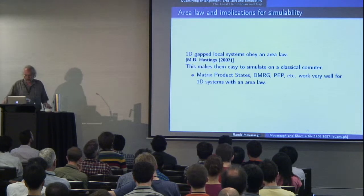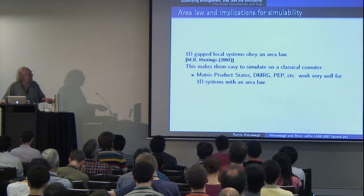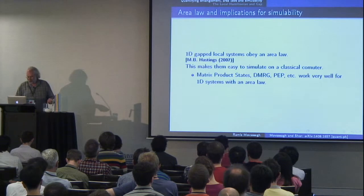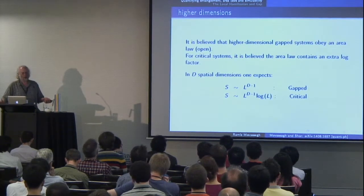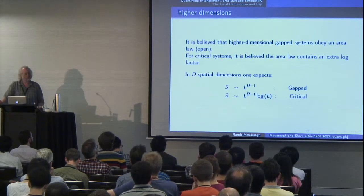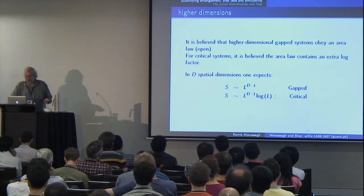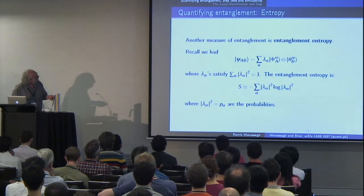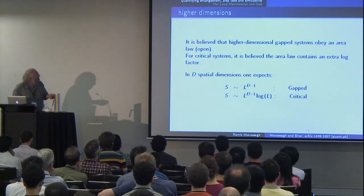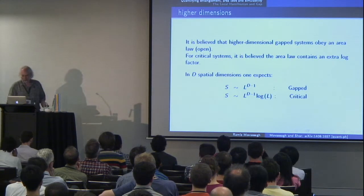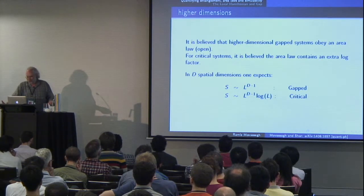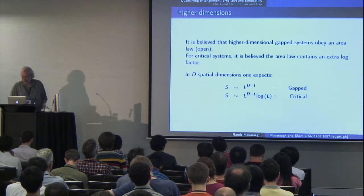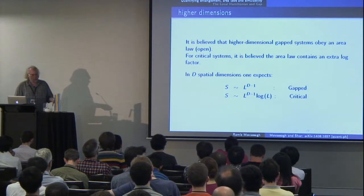This makes them easy to simulate on a classical computer, because matrix product states and DMRG work very well for one-dimensional systems with area laws. It's believed that higher dimensional gapped systems satisfy area laws, but this is still a very important open question. For critical systems where there's a phase transition, it's believed that the area law contains an extra log factor. So in D spatial dimensions, one would expect entropy is order L^(D-1) for gapped systems and an extra log L for critical systems.